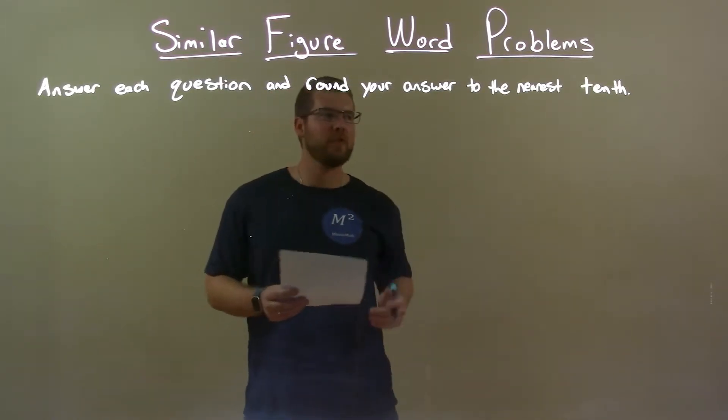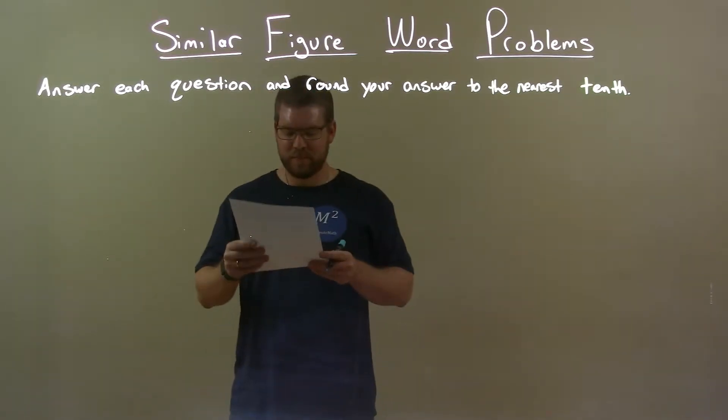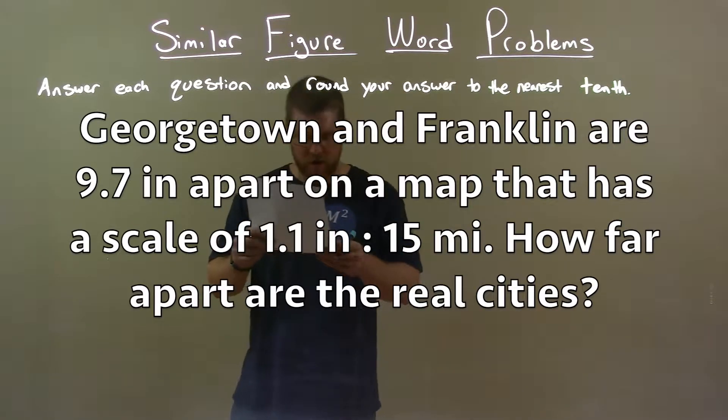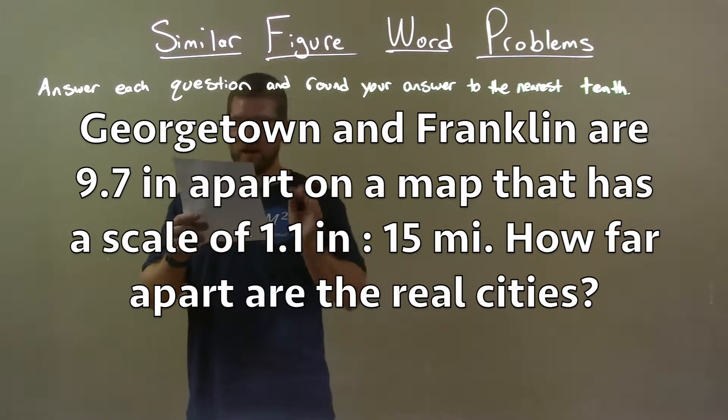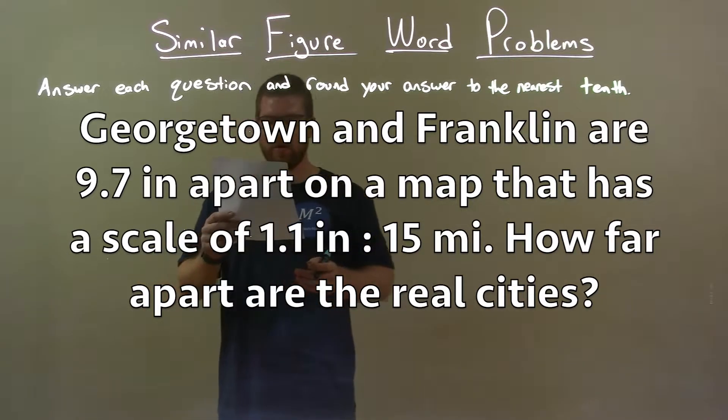Answer each question and round your answer to the nearest tenth. If I was given this word problem, Georgetown and Franklin are 9.7 inches apart on a map that has a scale of 1.1 inches to 15 miles. How far apart are the real cities?